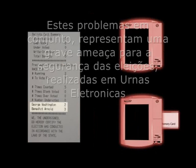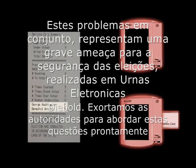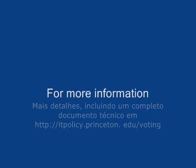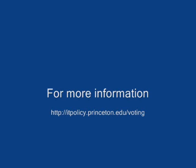These problems, taken together, pose a very serious threat to the security of the elections conducted on Diebold AccuVote TS voting machines. We urge public officials to address these issues promptly. More details, including a full technical paper containing a more complete security analysis and a discussion of mitigation strategies, can be found on our website at itpolicy.princeton.edu/voting.